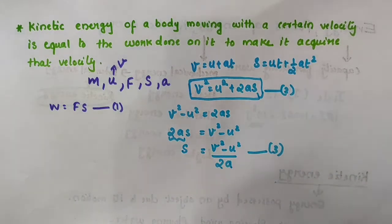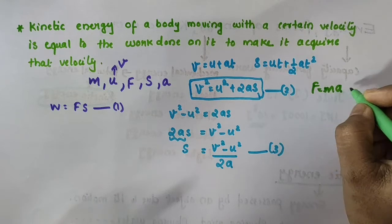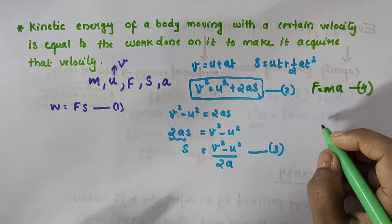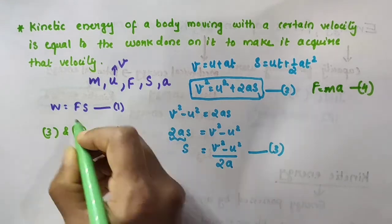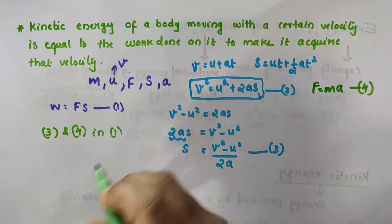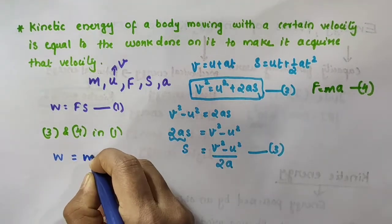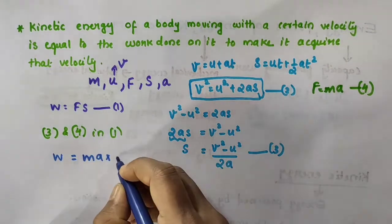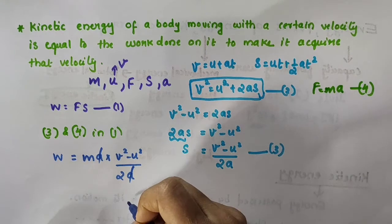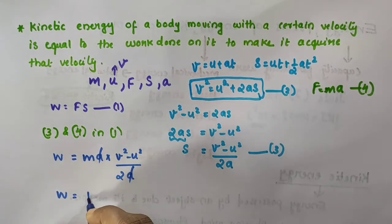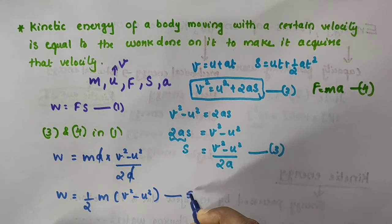From Newton's second law of motion, F = MA — taking this as equation number 4. Now, substituting equation number 3 and equation number 4 into equation number 1, W = F × S becomes W = MA × (V² − U²) / 2A. The A in the numerator and denominator cancel, giving W = ½M(V² − U²) — taking this as equation number 5.